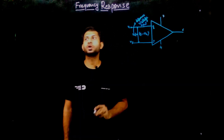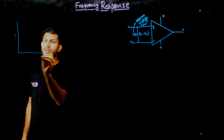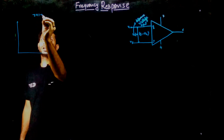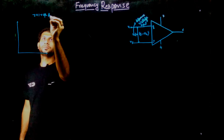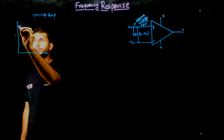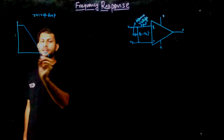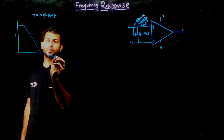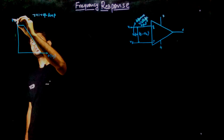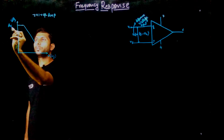For having the frequency response of the 741 op-amp, as discussed in an earlier lecture, the frequency response looks like this. On the x-axis we have frequency in logarithmic scale, and on the y-axis we have dB, which is the open-loop voltage gain.